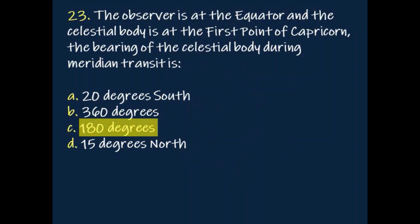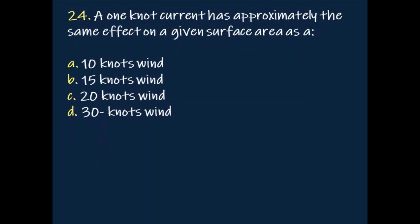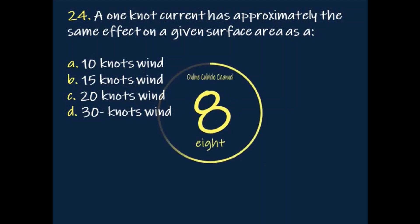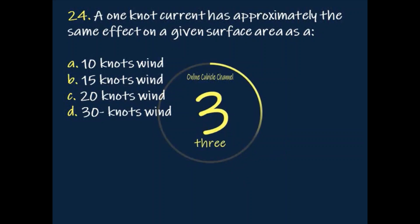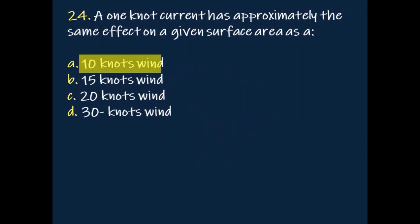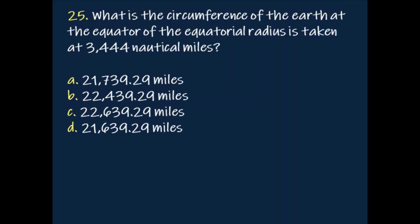Question: A one-knot current has approximately the same effect on a given surface area as a? Answer: 10-knot wind. Question: What is the circumference of the earth at the equator if the equatorial radius is taken at 3,444 nautical miles?